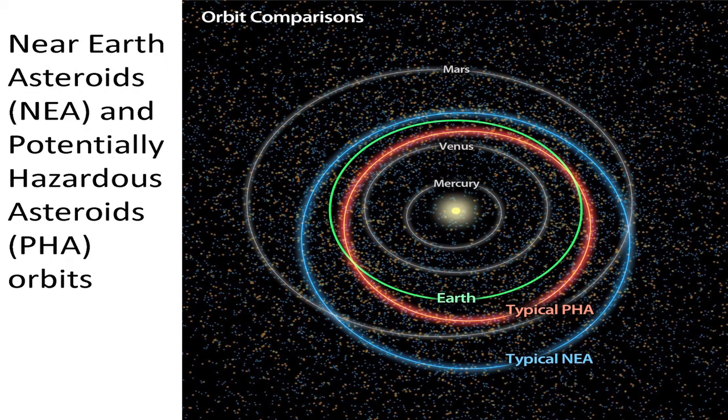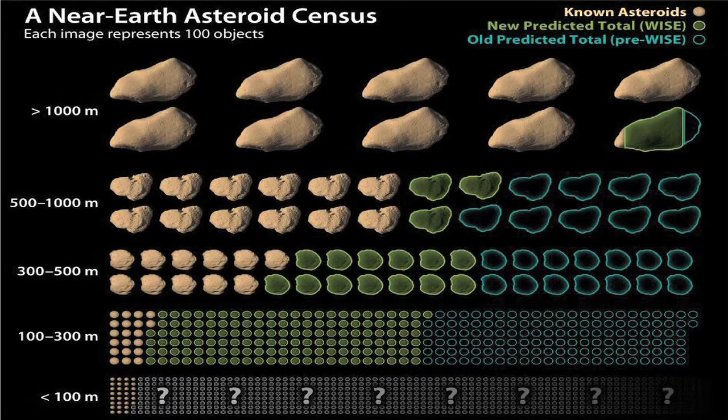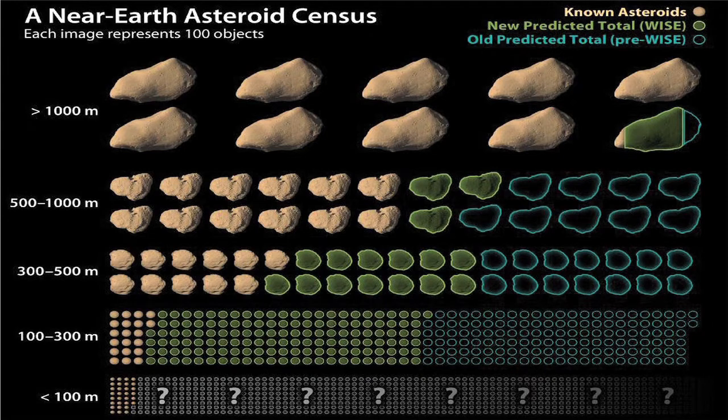The question is can you do something about it? Do you have to simply take it? Do you have to just duck and cover? Do you have to hope that you don't die in one of these events? Or are we at the point in our technological evolution to do something about it?